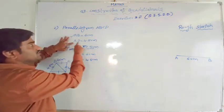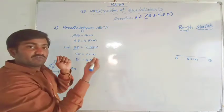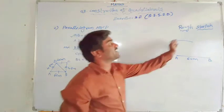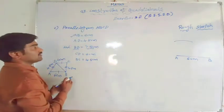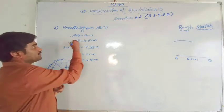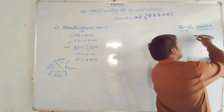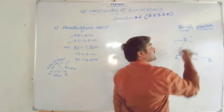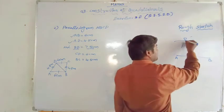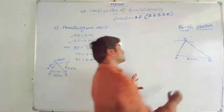Then AD equal to 4.5 centimetres. We have A, so we can try for locating D. There will be D somewhere - we don't know the exact position. Now BD equal to 7.5 centimetres - we have B, so we can locate D. Take BD equal to 7.5 centimetres radius on the compass. Keep the tip at B and draw an arc; it will intercept, and the intersection point will be located as D.